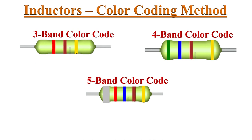Three, four or five color bands are printed on the inductor to indicate inductance and tolerance values. This type of color coding is very similar to resistor color coding, and reading is done according to the color coding table.